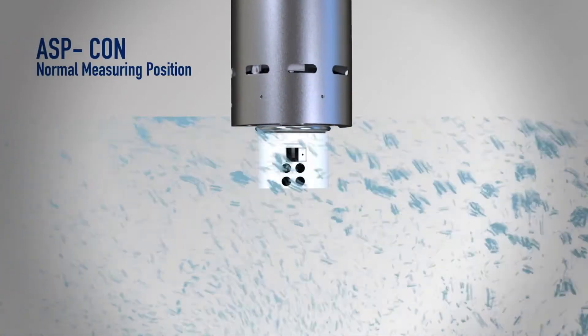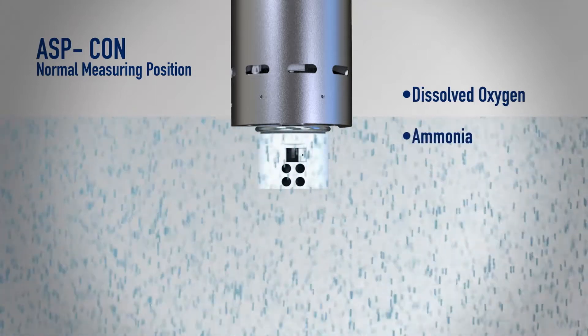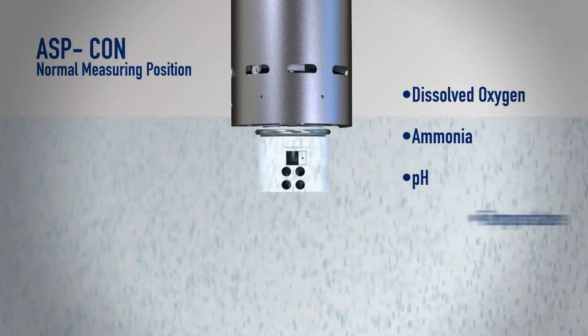Shown here in its normal monitoring position, the ASPCON measures dissolved oxygen, ammonia, pH and temperature.